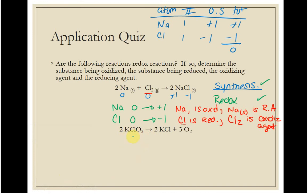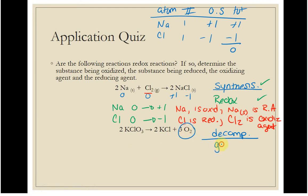Next: potassium chlorate decomposes to potassium chloride and oxygen. One reactant, two products — this is decomposition. There's no acid or base, so it can't be acid-based. There is oxygen gas produced, so this is a gas-evolving reaction. Let's check if it's also redox by looking at oxidation numbers.